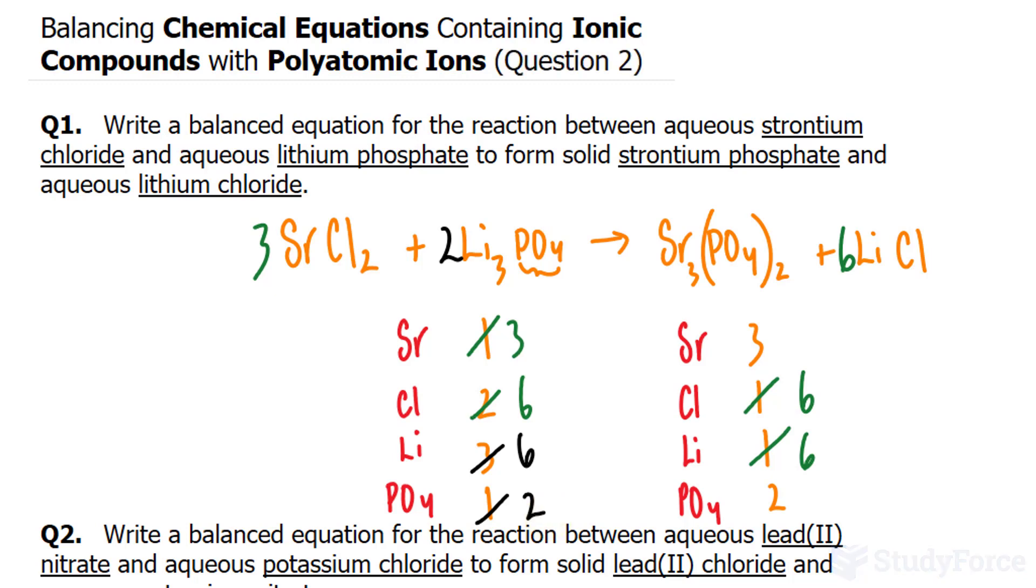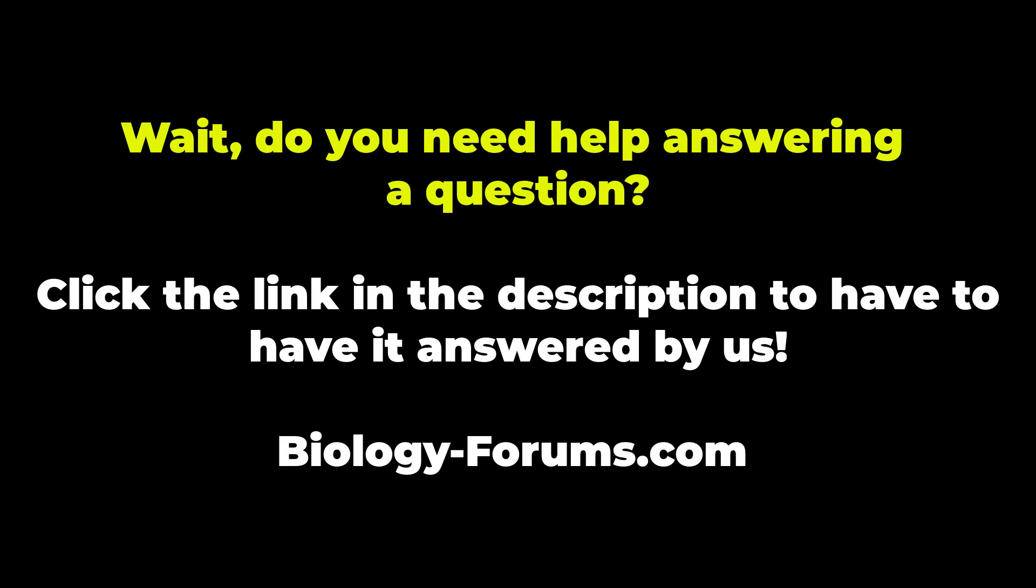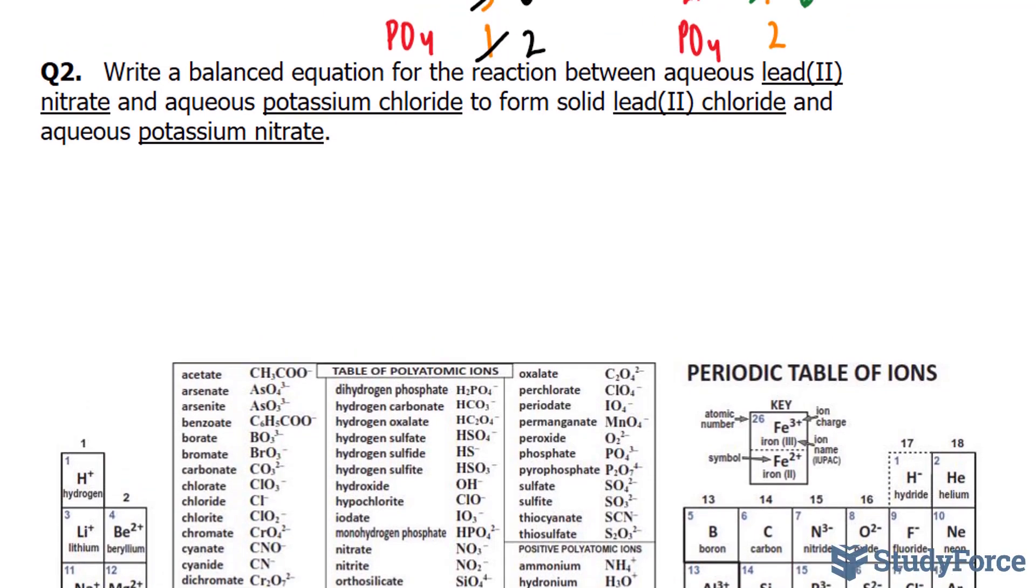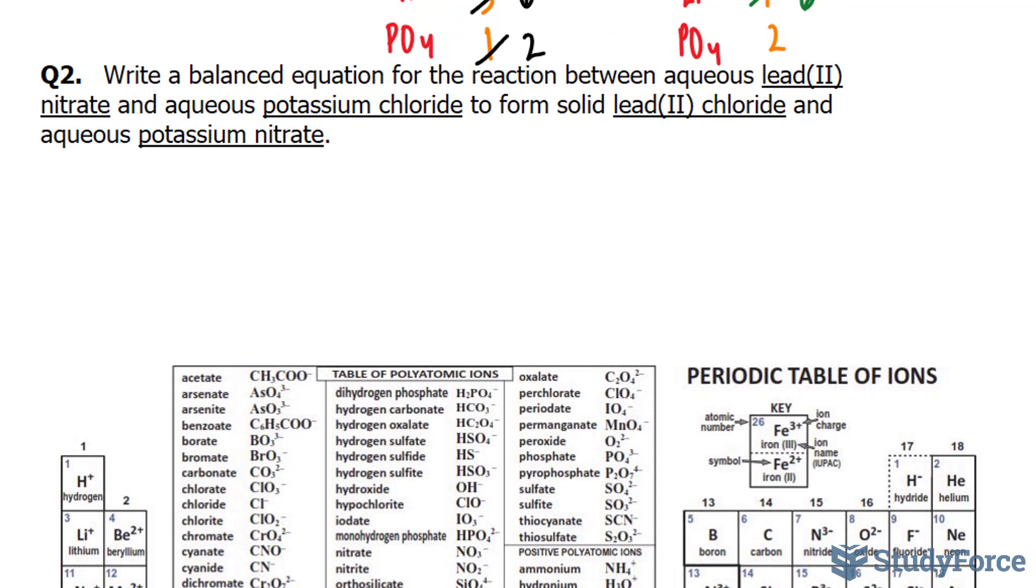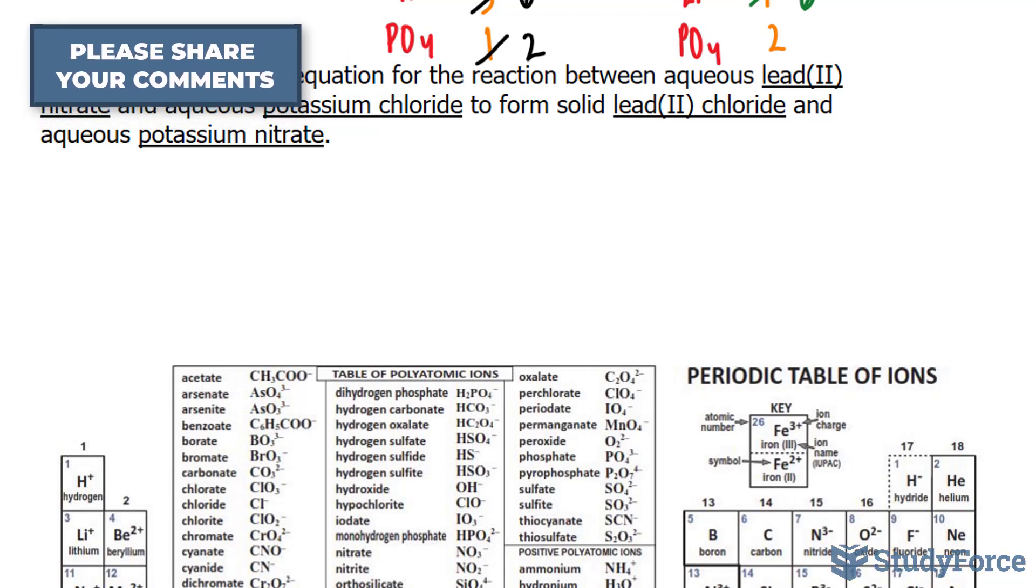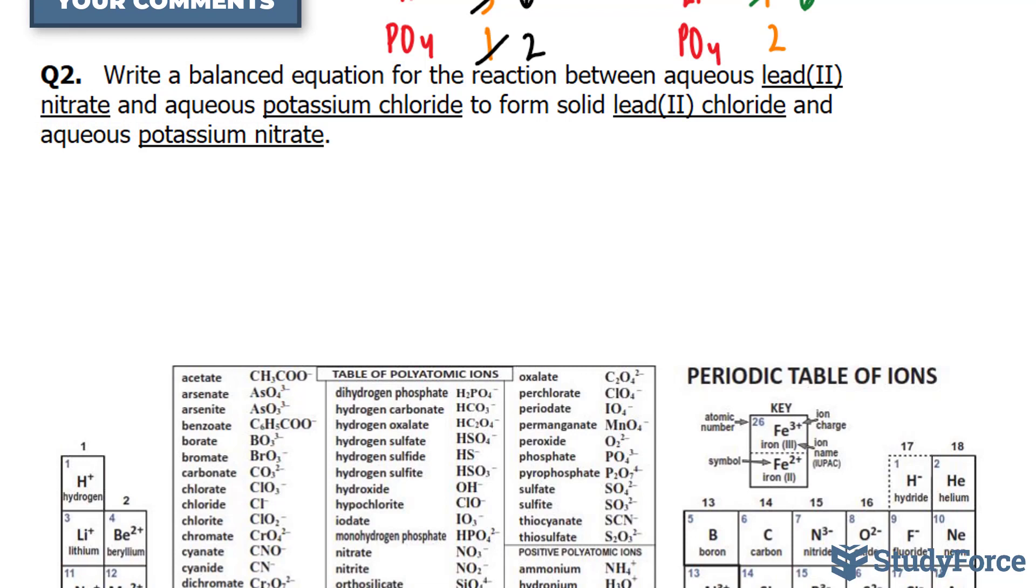Now moving on to question number 2, we are expected to write a balanced equation for the reaction between aqueous lead(II) nitrate and aqueous potassium chloride, which forms solid lead(II) chloride and aqueous potassium nitrate. Let's start by creating the formulas for these chemical compounds.